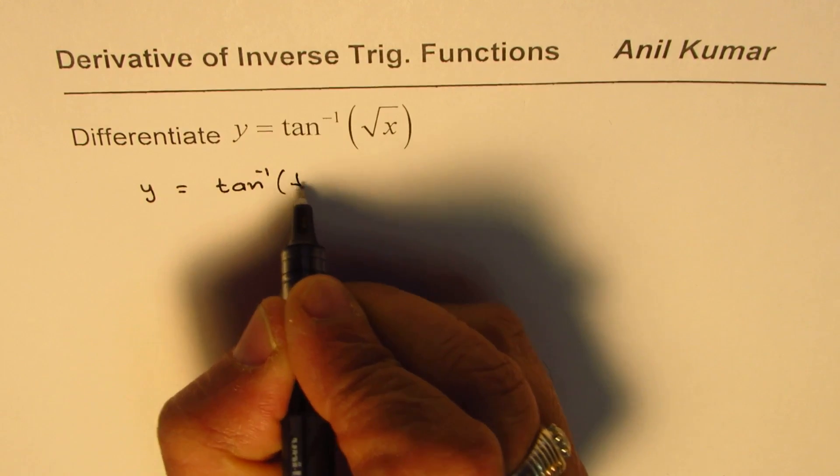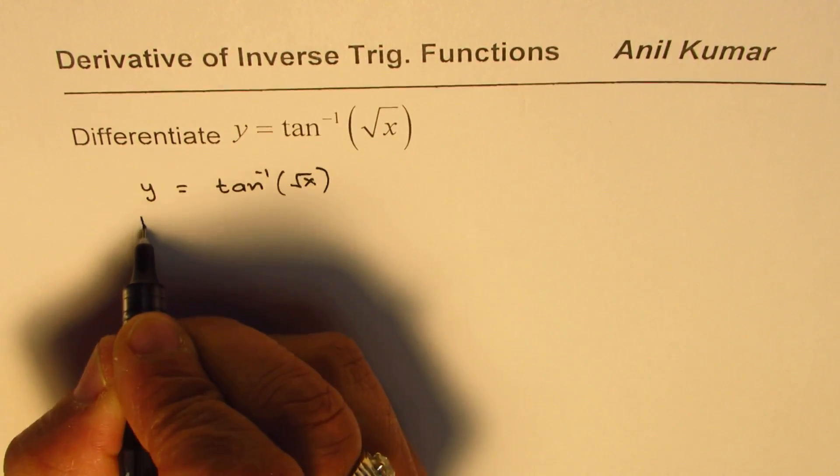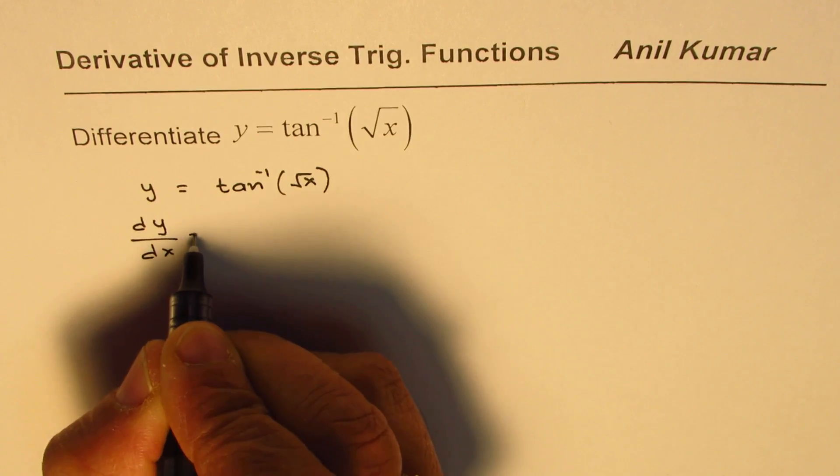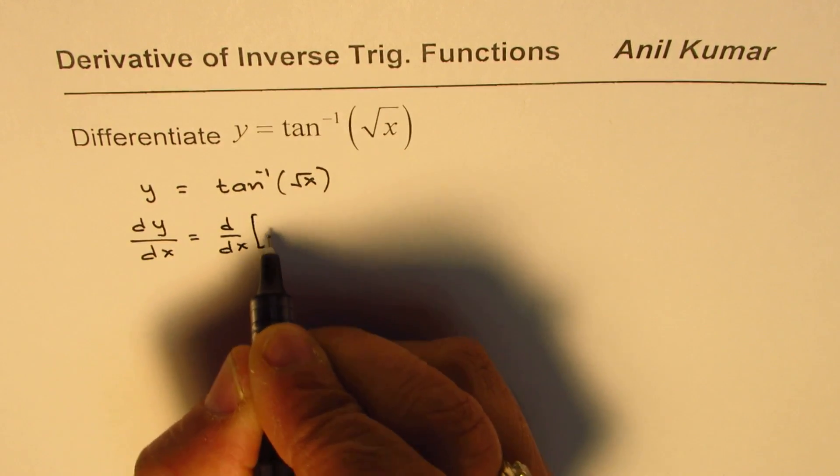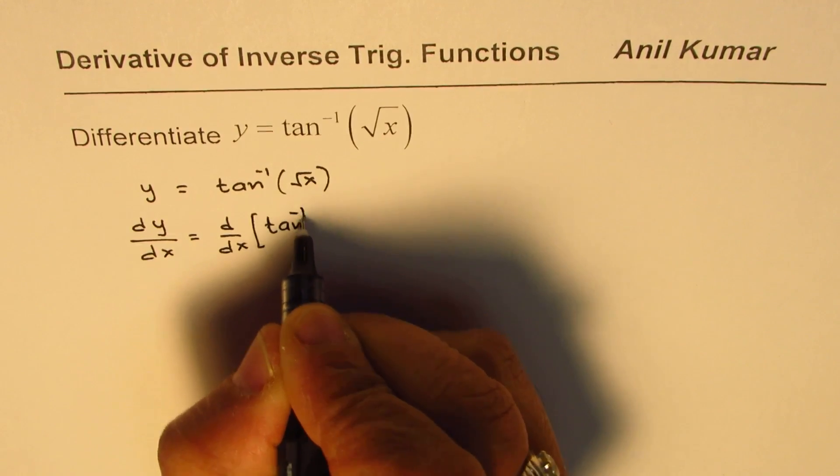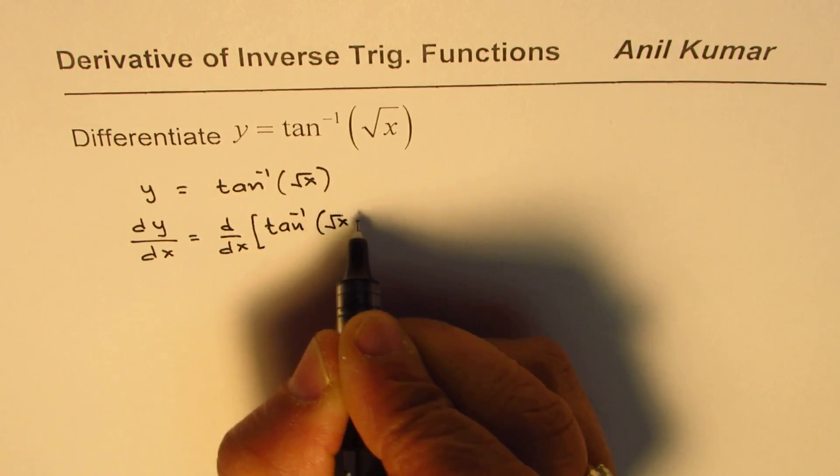So we are given y equals tan inverse of square root of x. dy/dx will be equal to d/dx of tan inverse of square root of x.